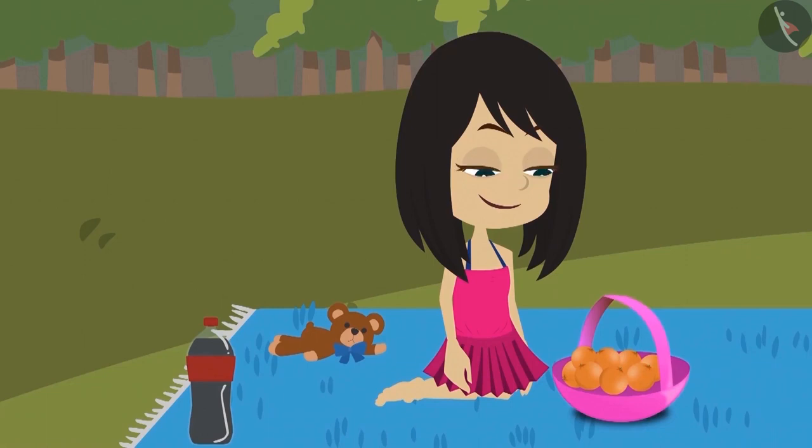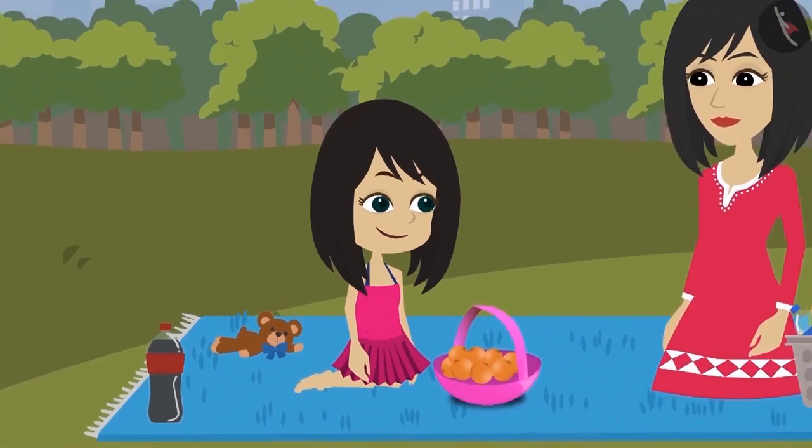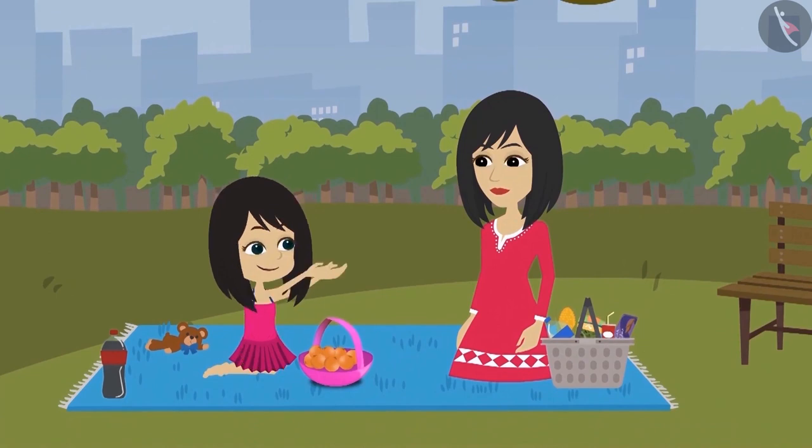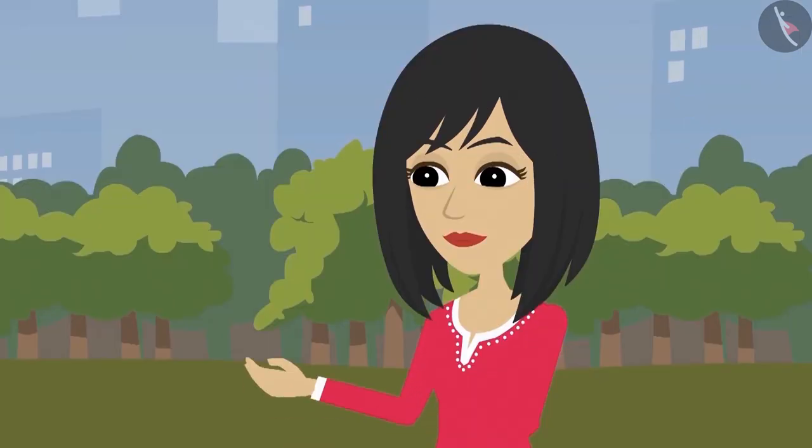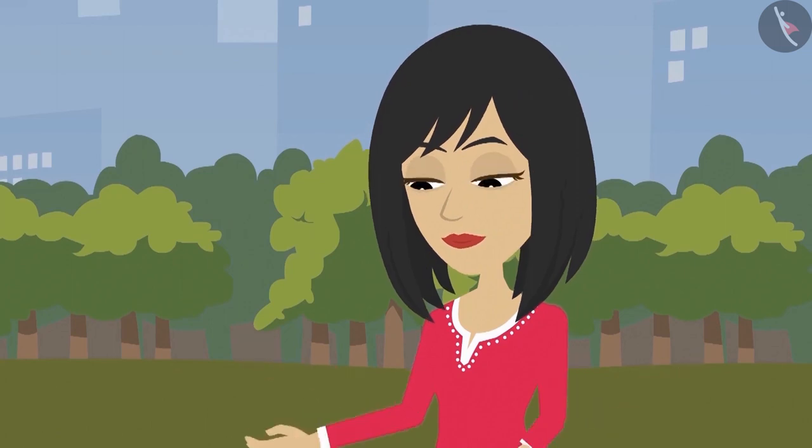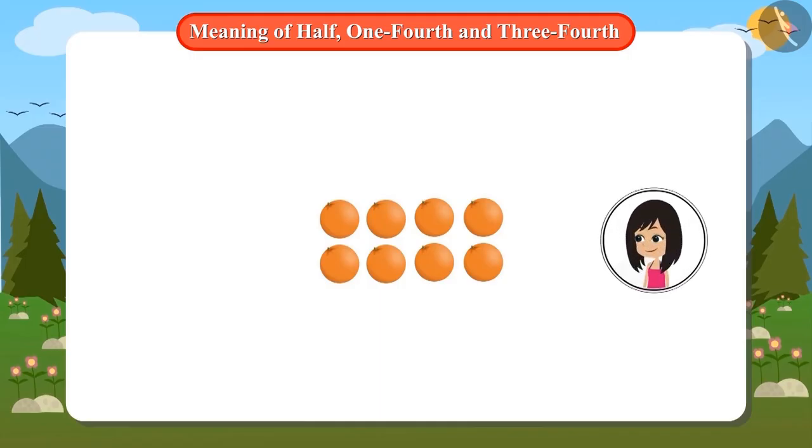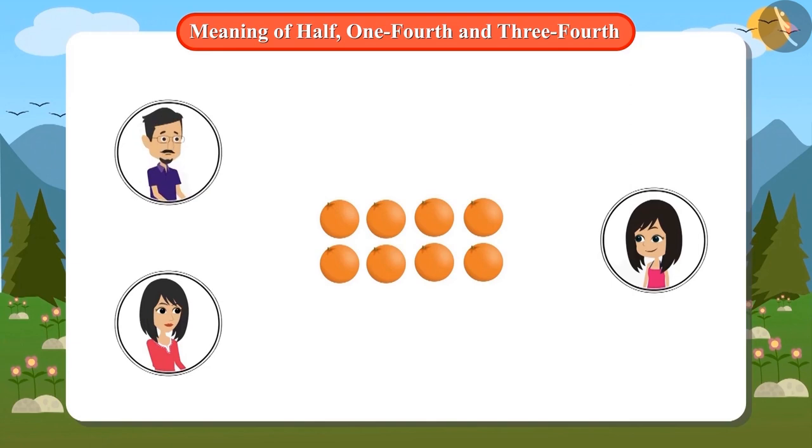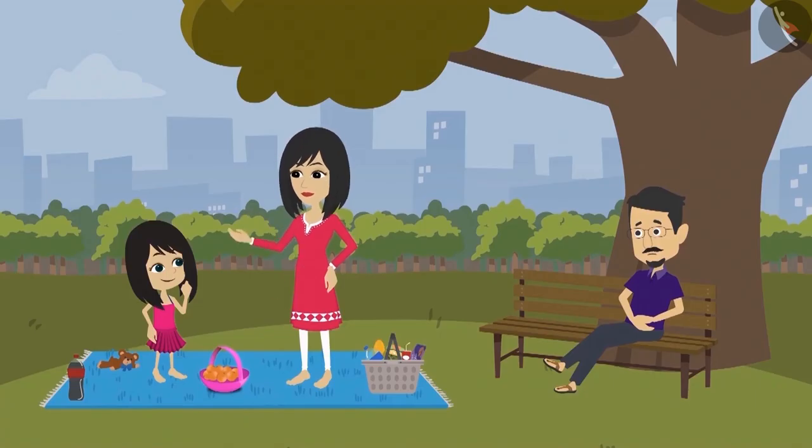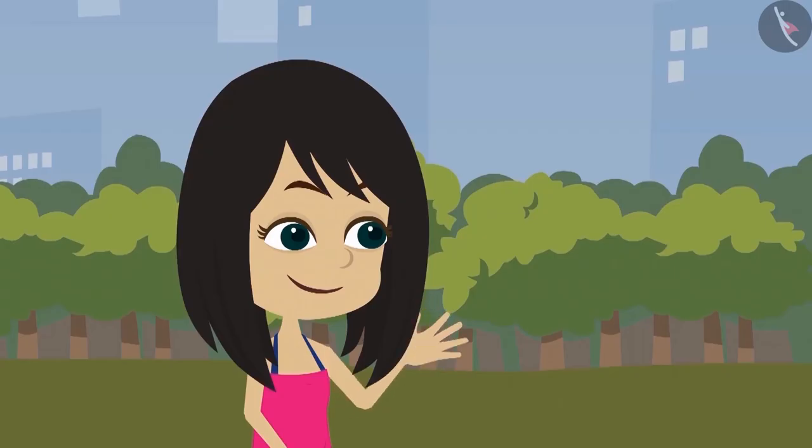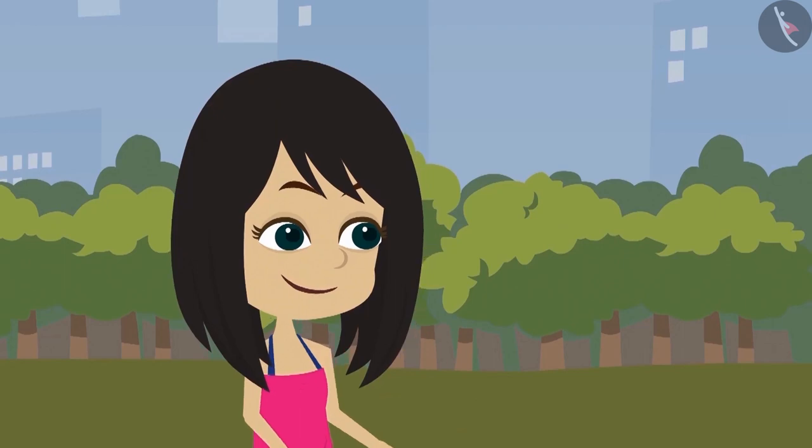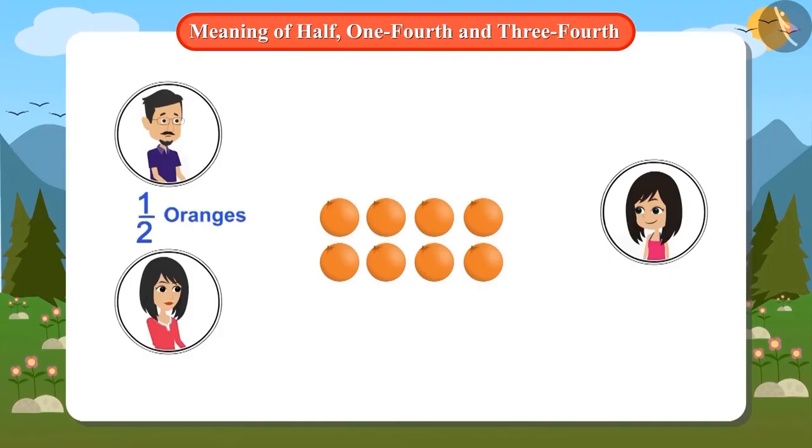She asked her mother, what are so many oranges for? Mummy tells her that all these oranges are for three people: for Neha, for mummy, and for papa. Mummy asked Neha to divide the oranges among the three people by herself. She tells mother that she will give half of the oranges to father, keep half the oranges for herself, and give half of the oranges for her mother.